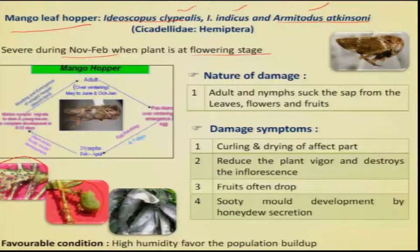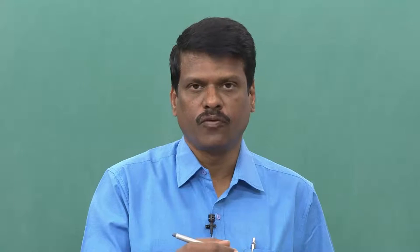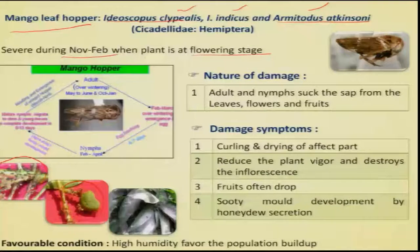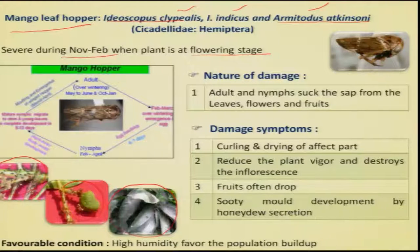They cause two types of damage. One is direct damage, where they suck the sap from the inflorescence and fruits. The other is indirect damage through ovipositional punctures and by producing honeydew. The honeydew promotes a particular species of fungi which develops into a sooty mold on the leaves, leading to reduction in photosynthetic activity. Overall, if this pest is not controlled, there will be a severe loss in yield.